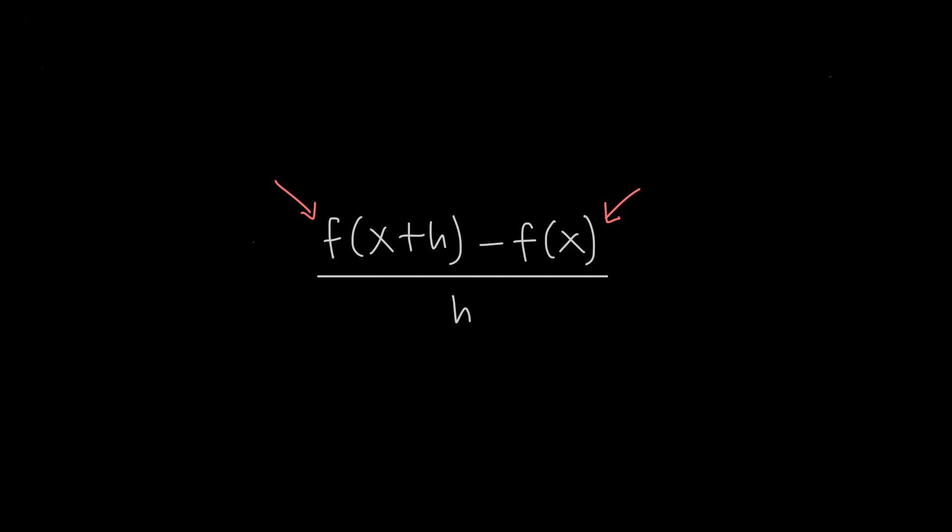But let's do an example where we find the difference quotient for a fraction, like the function 3 over x minus 2. Starting with the difference quotient formula, we can replace f of x with 3 over x minus 2, since f of x is always just the original function that we've been given.